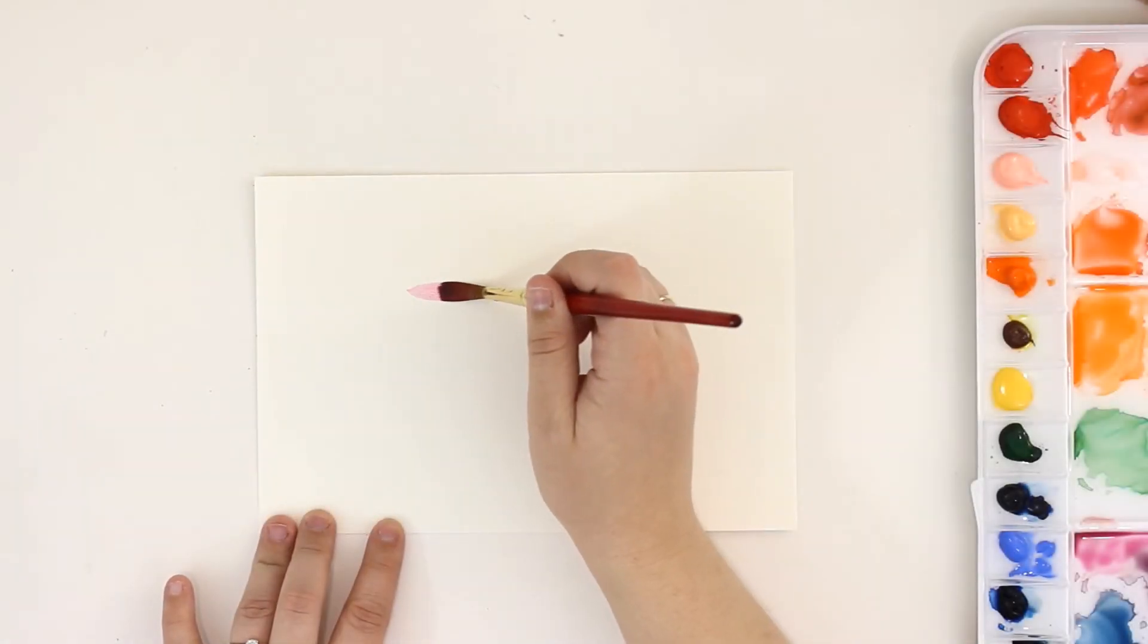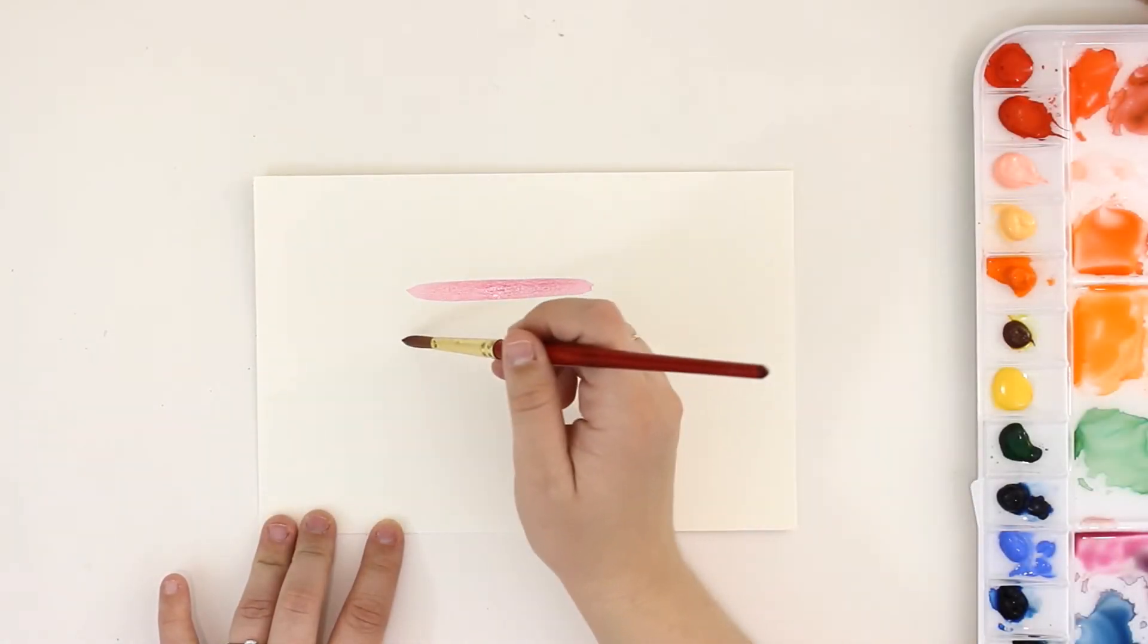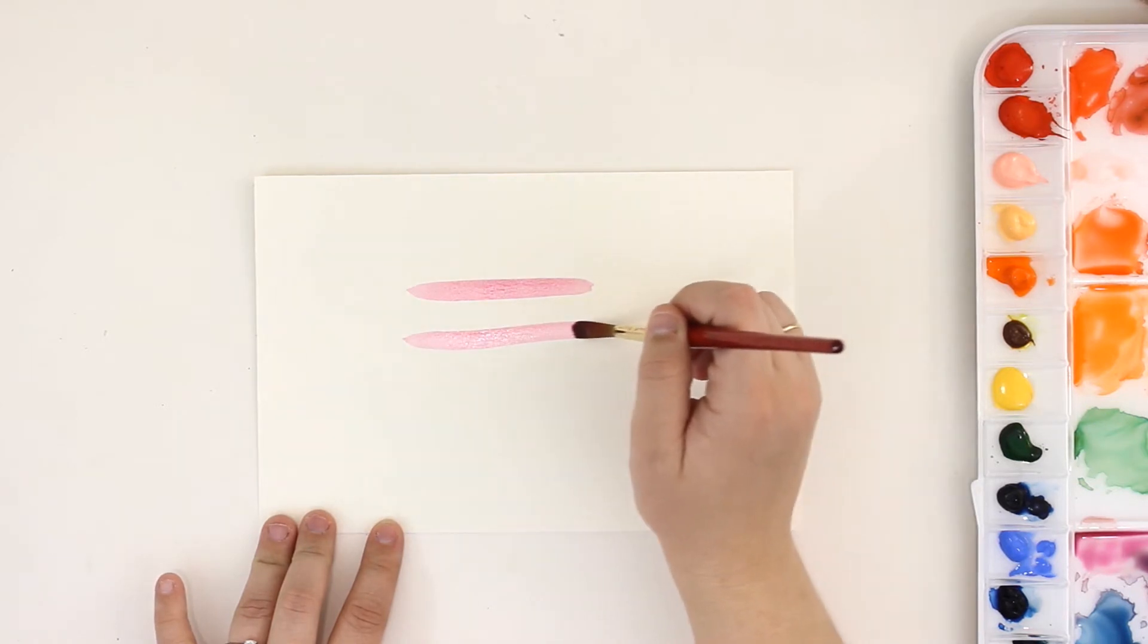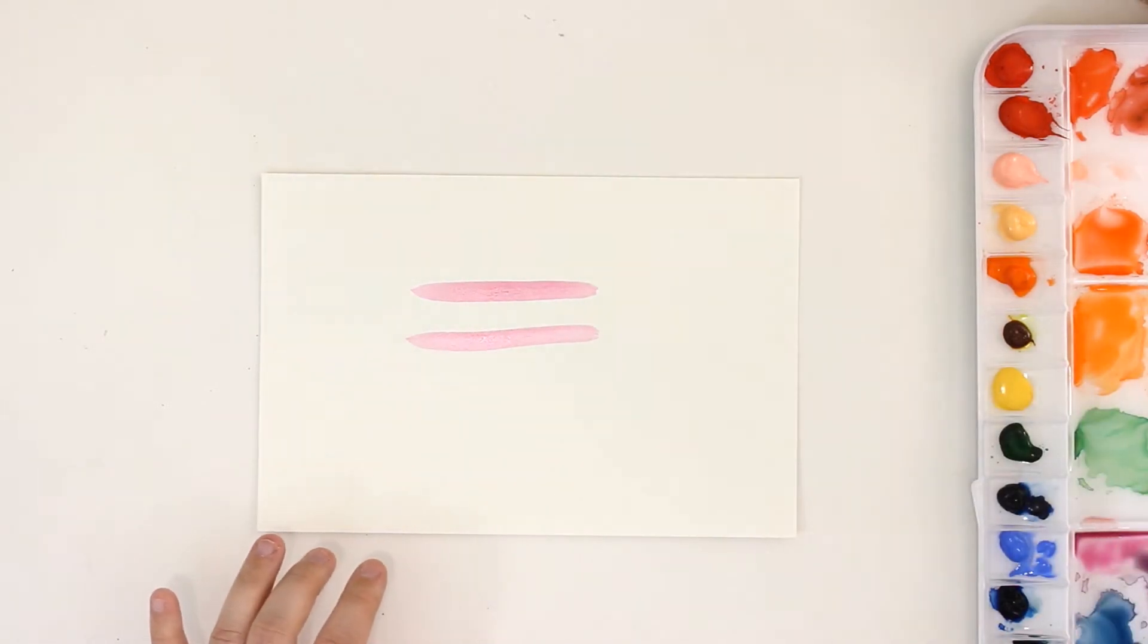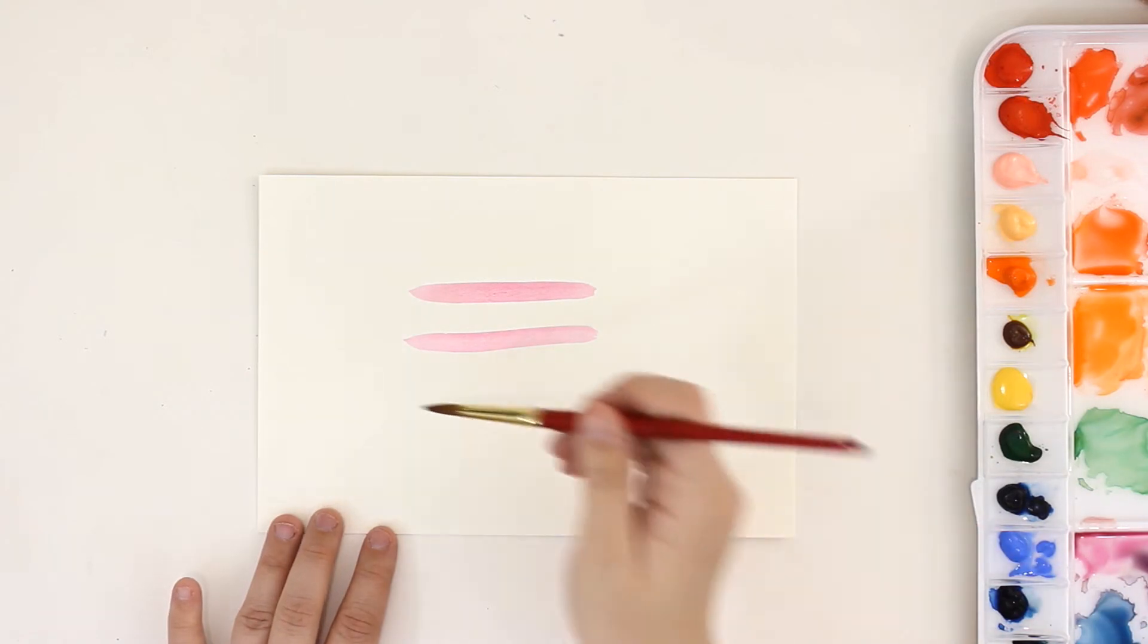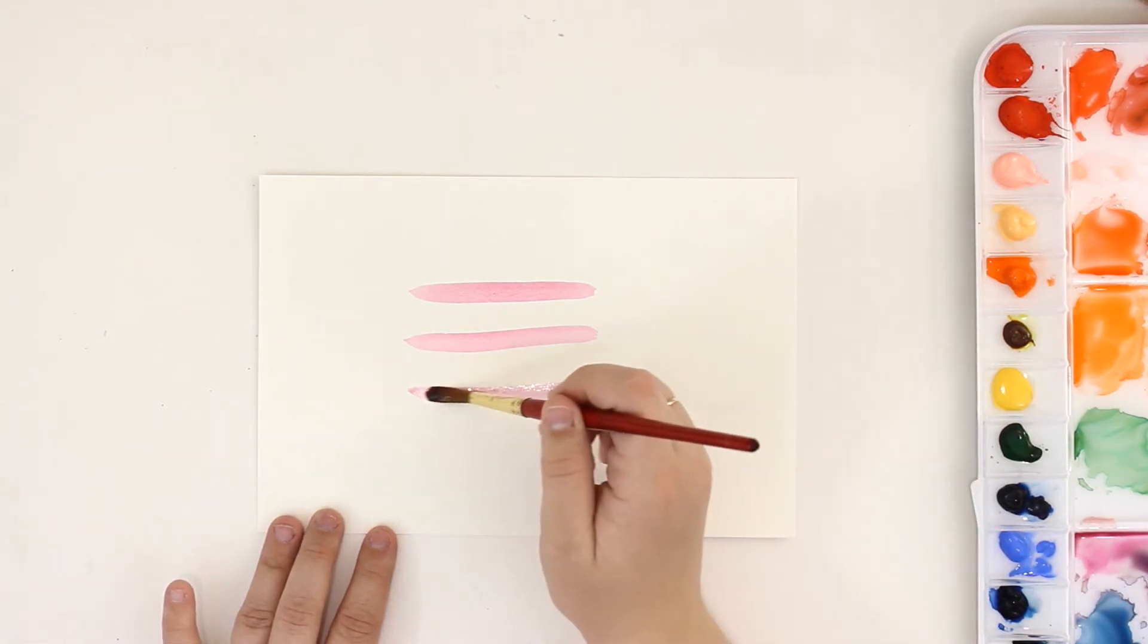Today I'm going to show you how to use the glazing technique using a monochromatic color scheme. First, paint a few lines running horizontally on your paper and let them dry completely. For glazing to work, your paint needs to be totally dry before you can add in another layer.